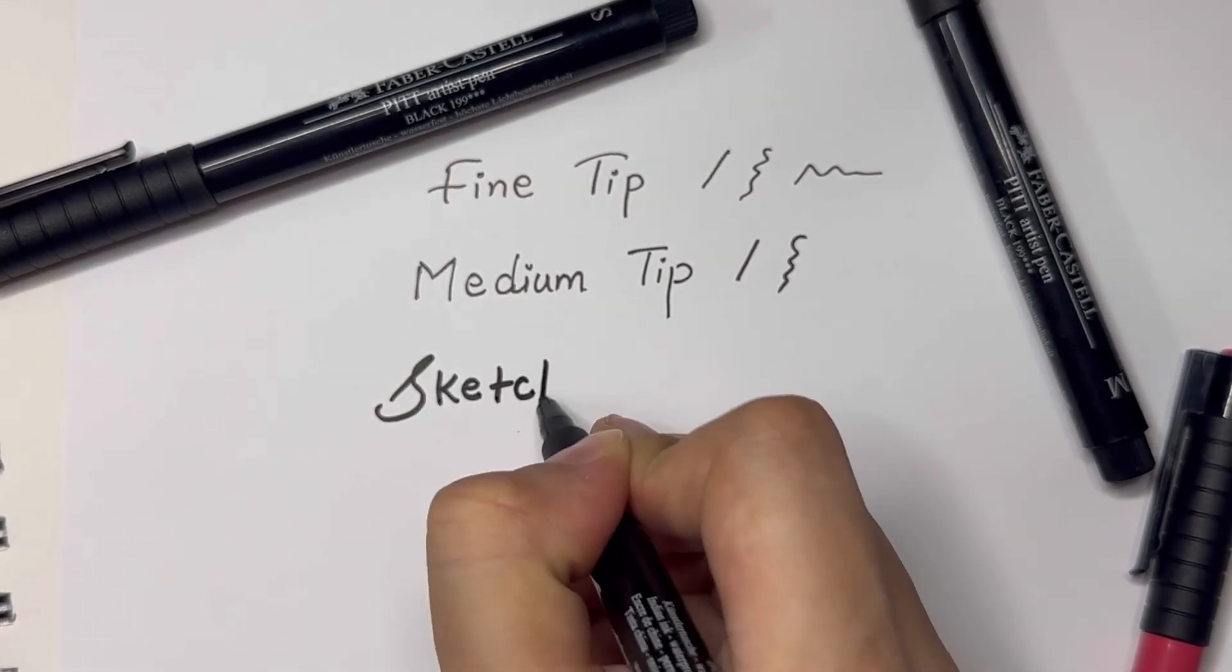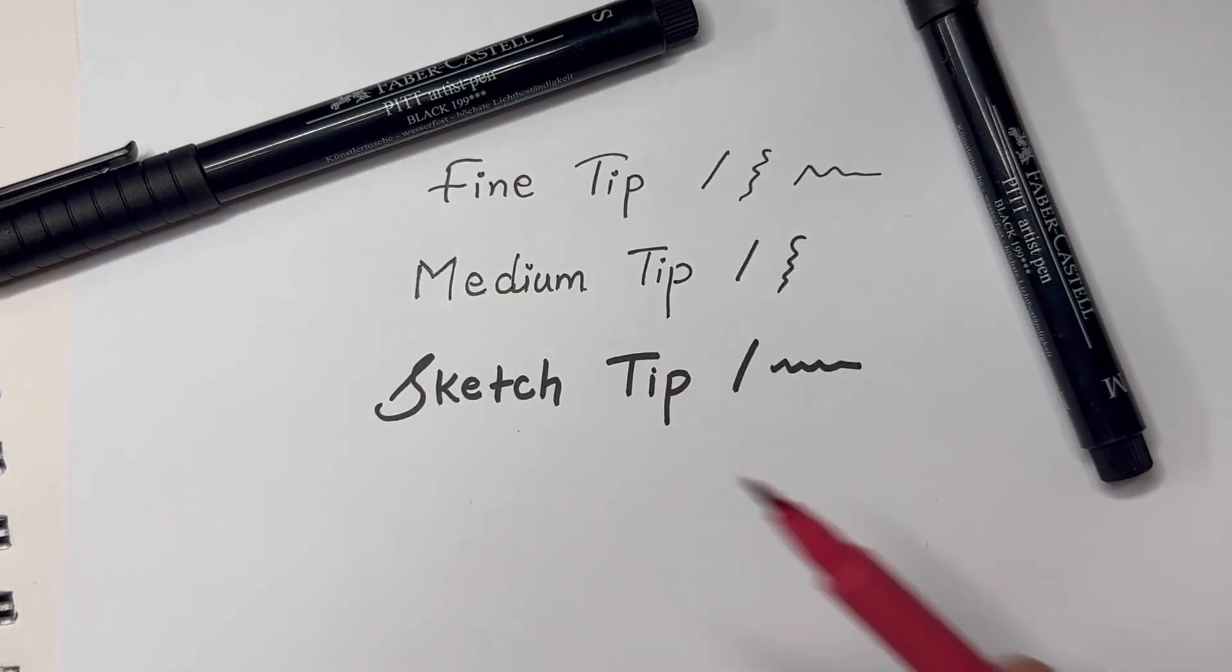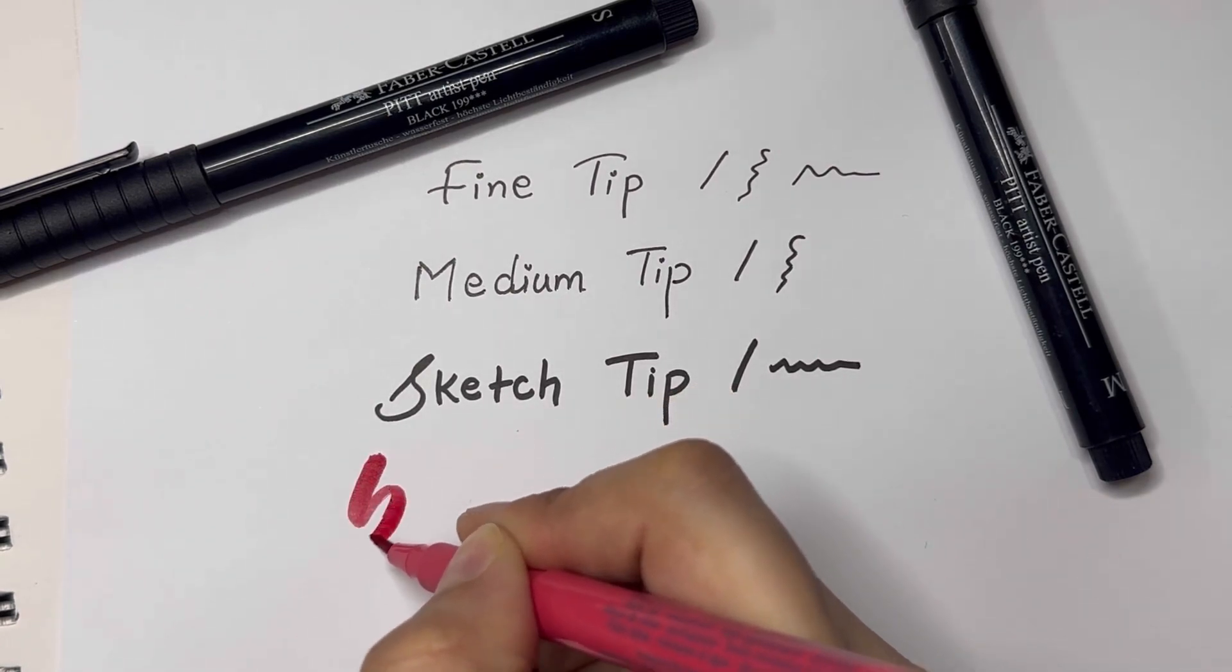Next we have the Faber-Castell brush pen. I have already tried brush pens from this brand and they are really good. You can make those thin and thick strokes easily. This is a medium tip brush pen and it's easy to control.